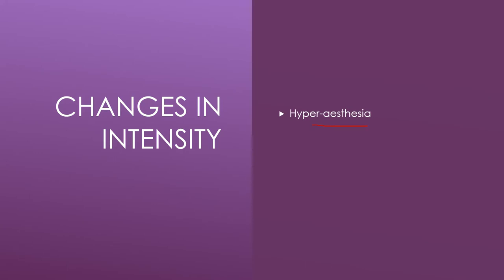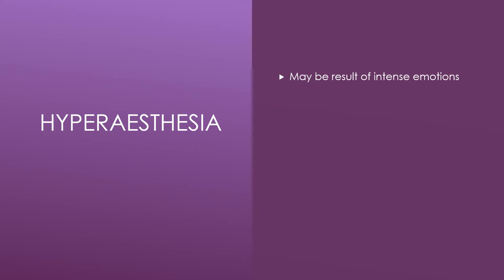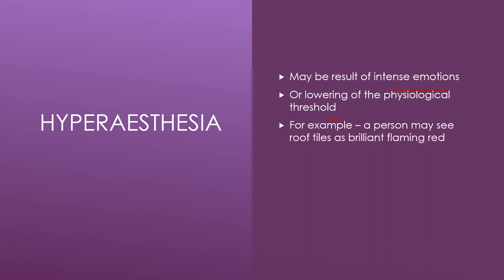Let's talk about changes in intensity. Number one is hyperesthesia — hyper means that you are more sensitive to any sensation. Number two is hypoesthesia — the sensory intensity is decreased. Hyperesthesia may be a result of intense emotions or lowering of the physiological threshold.